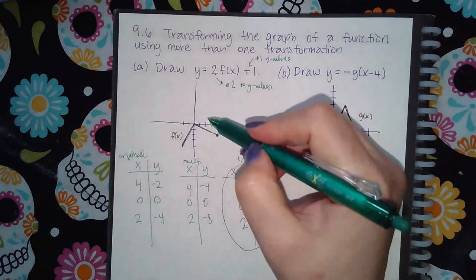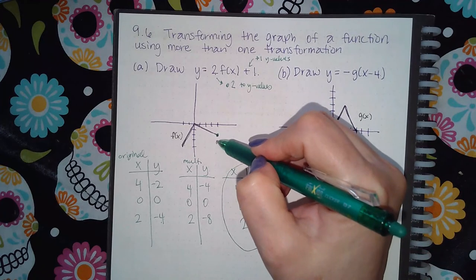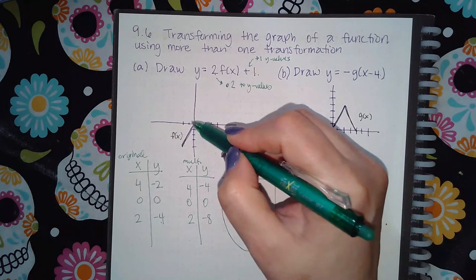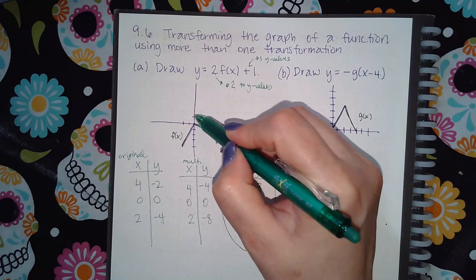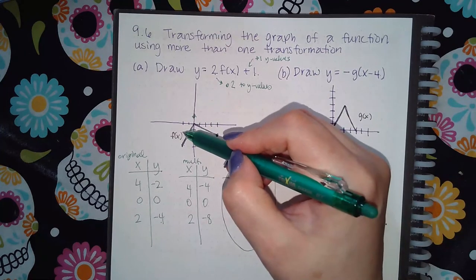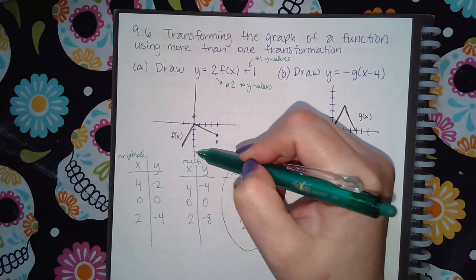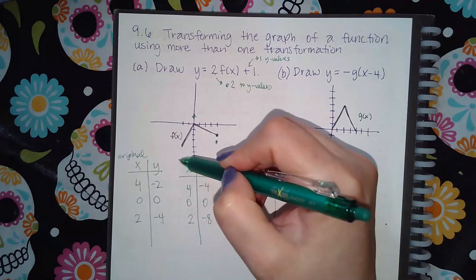So we get negative four and negative three. We get zero and one. And then we get two and negative seven. So it's about right here.